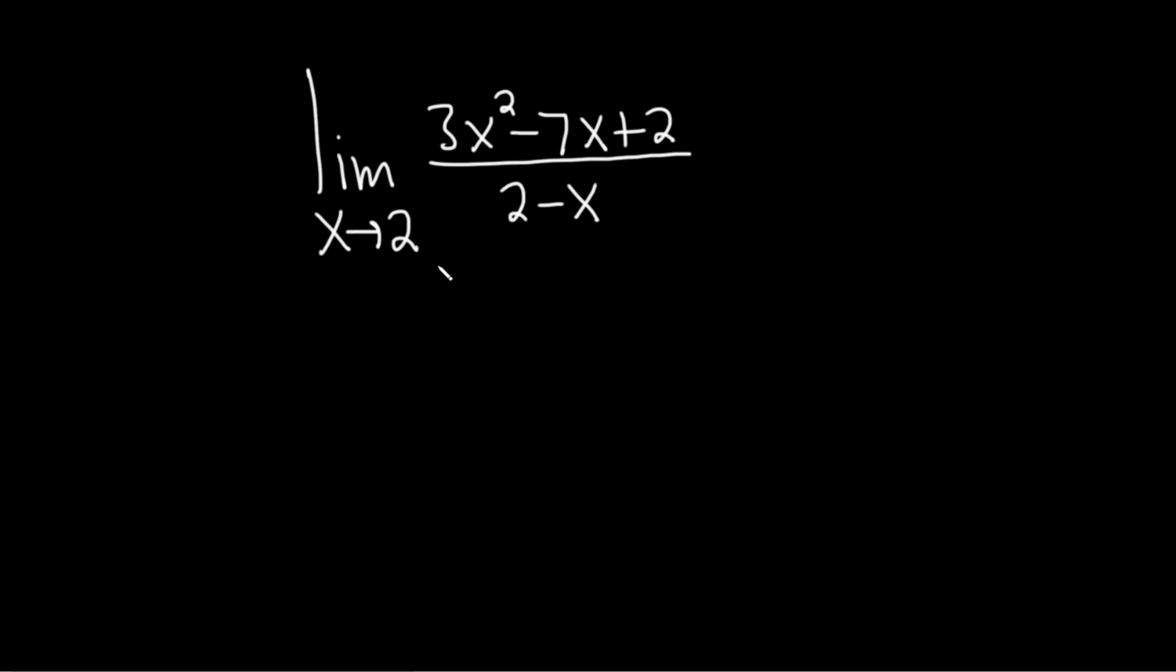The first thing you should always try when evaluating a limit is to take this number and plug it in. If you do that in this particular problem, you end up with 2 minus 2 on the bottom, so you end up with 0 on the bottom. And that's not good. You can never have 0 on the bottom. So we need to try something else.